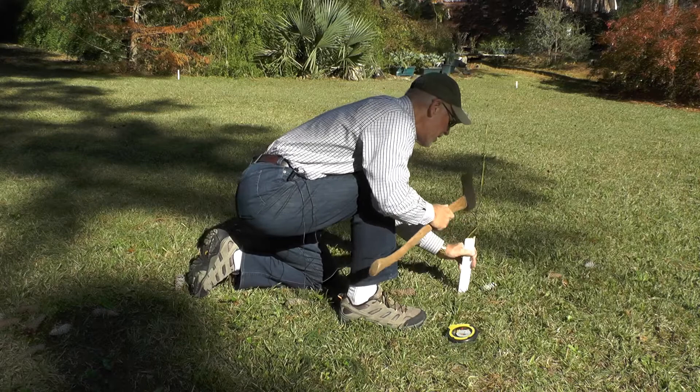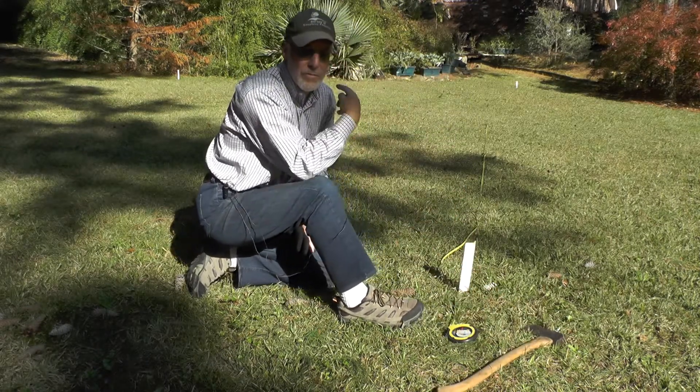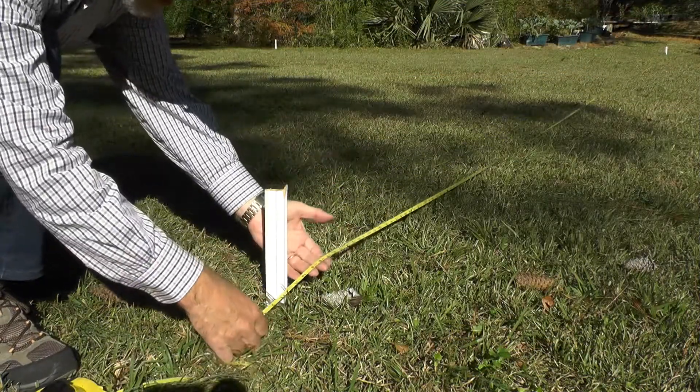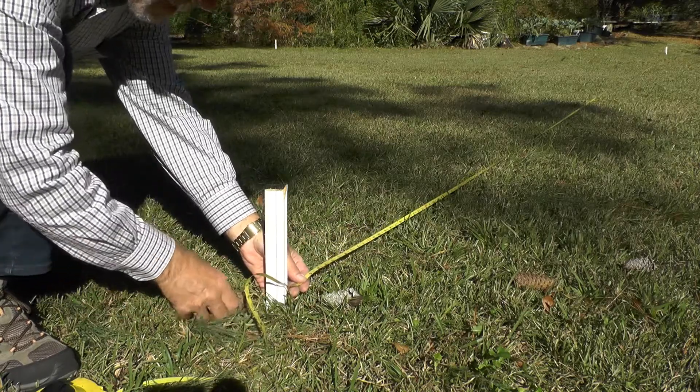So this will make a 90 degree angle back at the starting point. And here's a close-up right here of where the 50 foot mark came to in line with the pine cones.